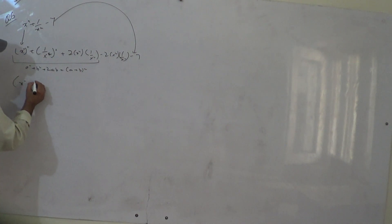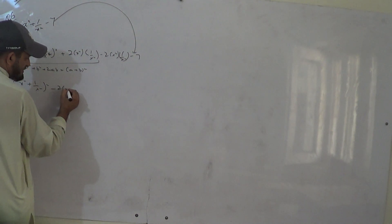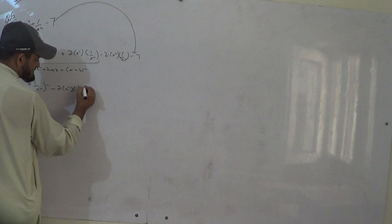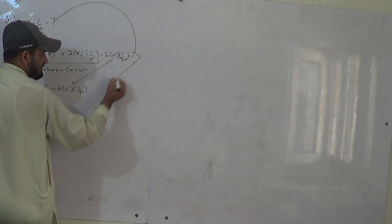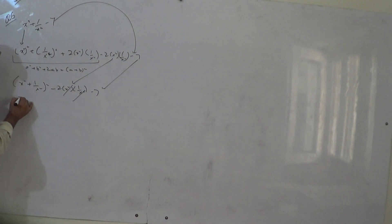Therefore, x square plus 1 by x square whole square minus 2 times x square times 1 by x square minus 7. Cancel. We get x square plus 1 by x square whole square minus 2 minus 7.